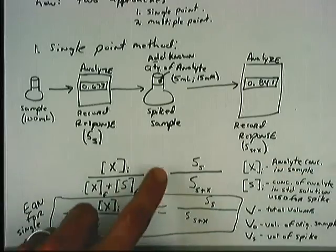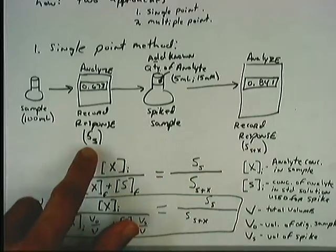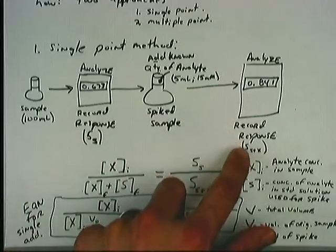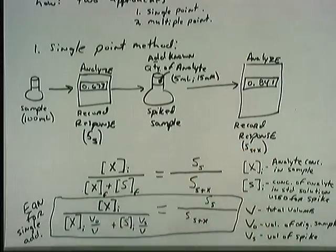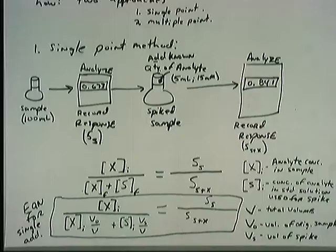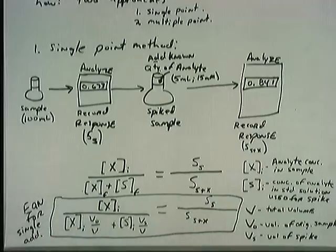What we have on the right side is the ratio of our S's. S sub S divided by S sub S plus X. That's the signal ratio. Basically the ratio of the signals at our detector.